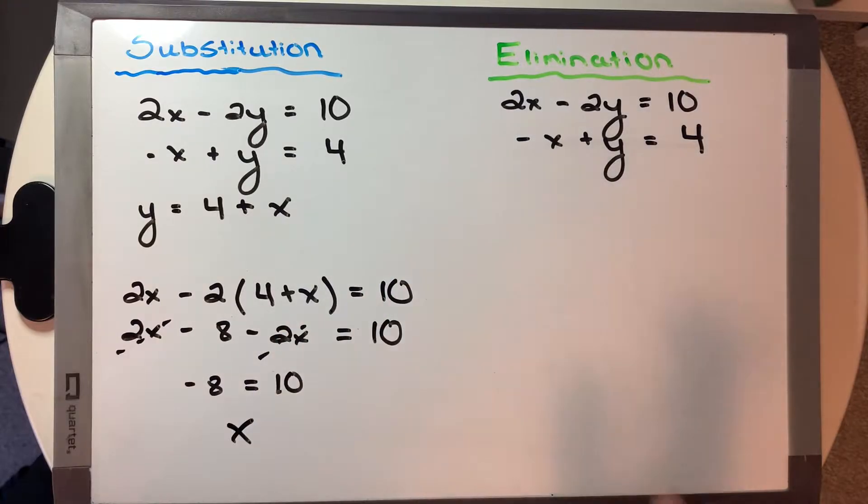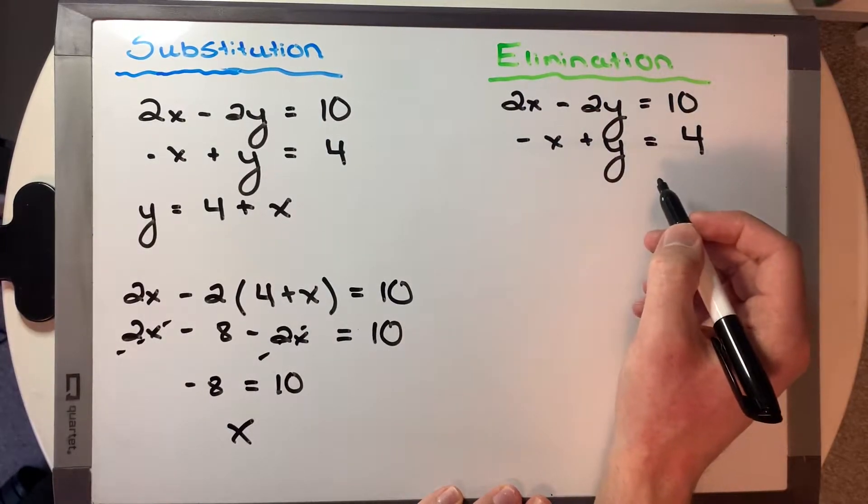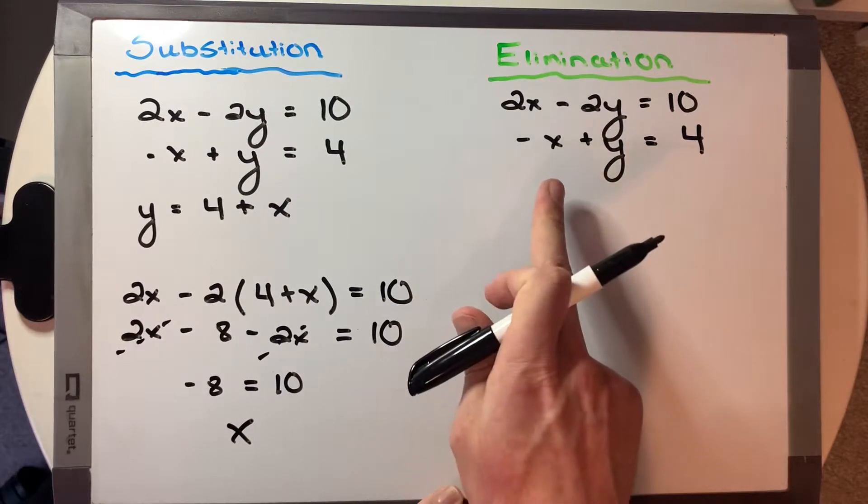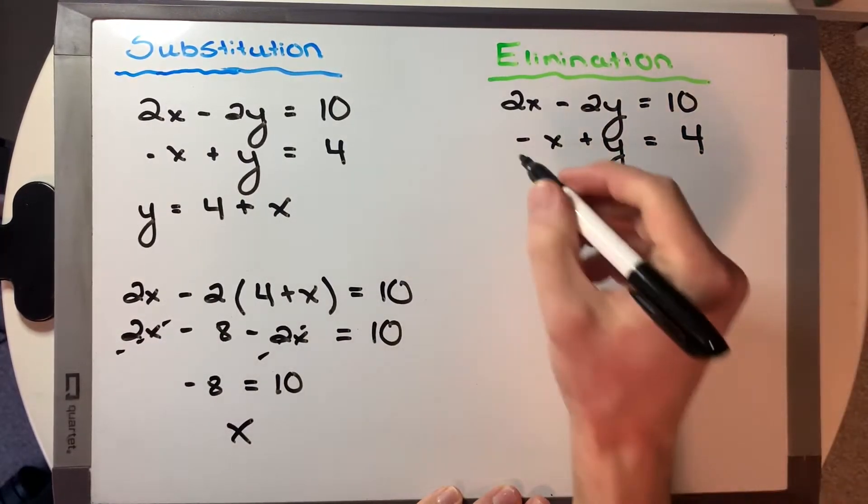Let's confirm that using elimination. So in the elimination method, we want to create a variable such that they cancel. So what can we do to this bottom equation to get a 2x? Well, we would just multiply it by 2.